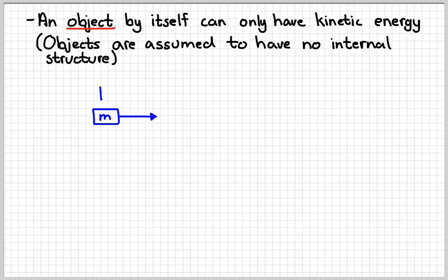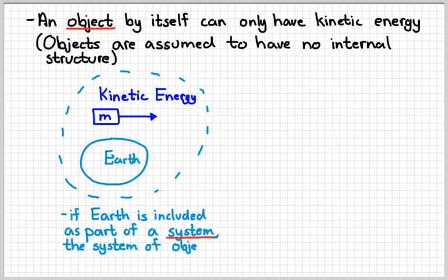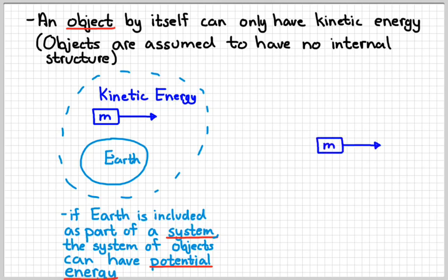So here's an object. It's got kinetic energy. However, if it were included within a system with the Earth, the Earth is included as part of the system, then this system of several objects would have a kind of energy called potential energy. The reason that would have potential energy is because those objects within the system can exert forces on each other. And those forces can change the motion of the objects. That's our definition of energy.